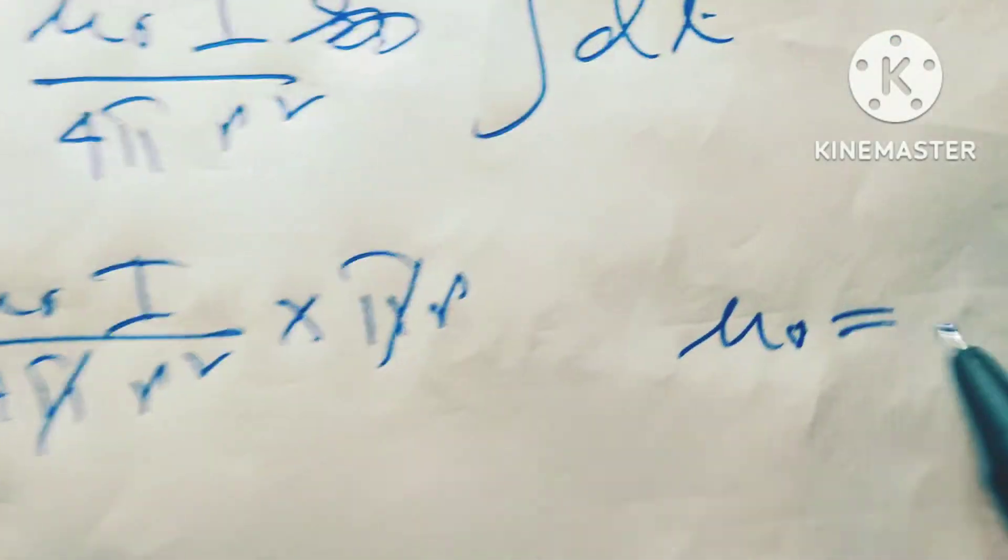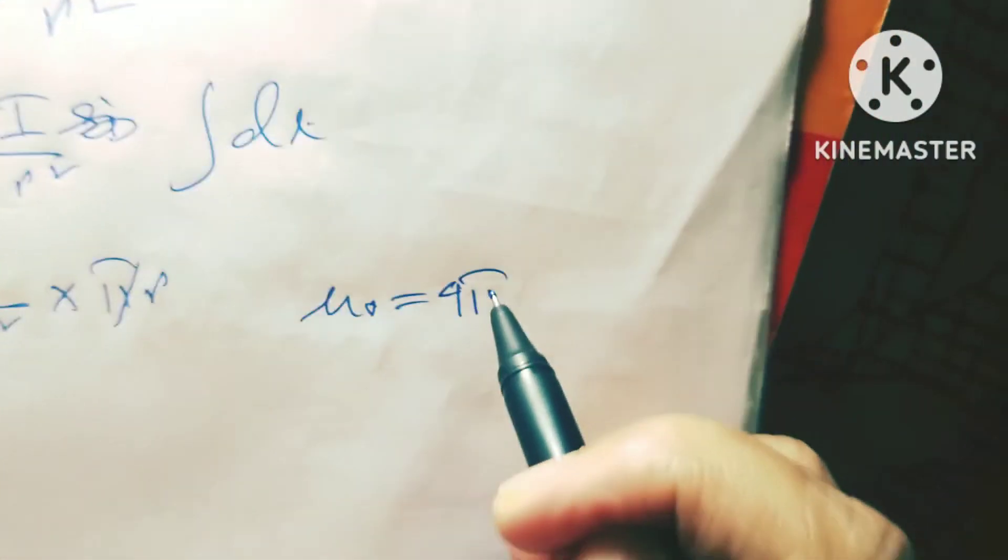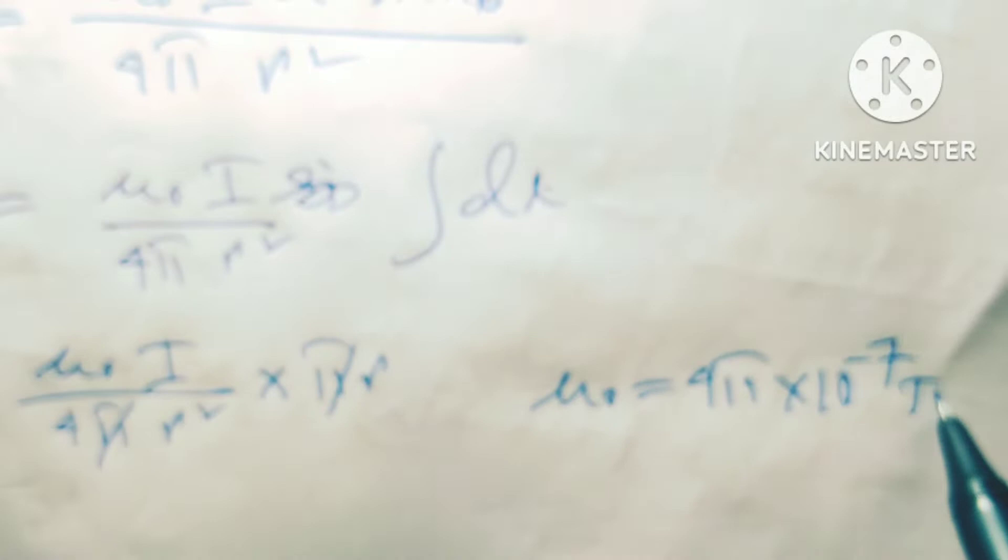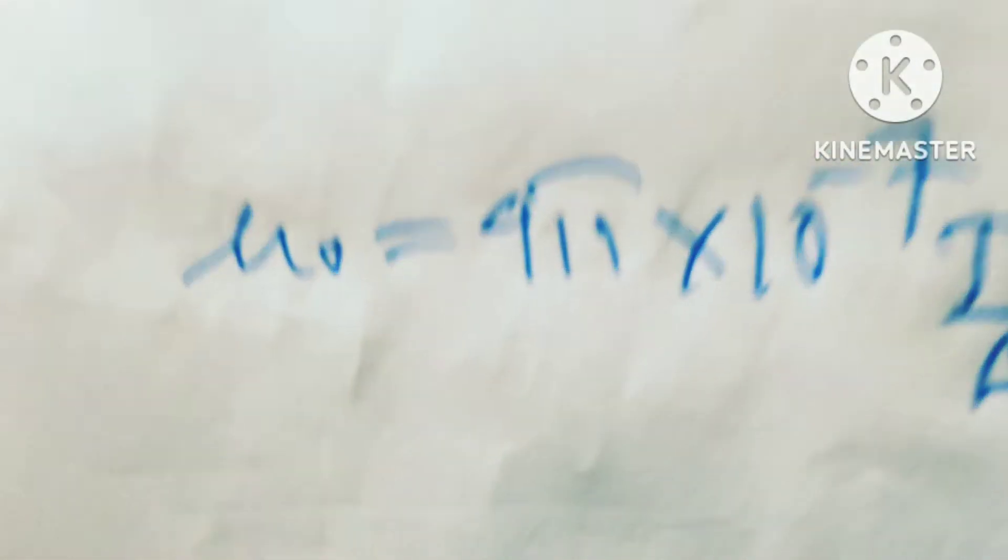What is the μ₀ value? μ₀ is equal to absolute permeability, 4π into 10 to the power minus 7, unity tesla meter per ampere.